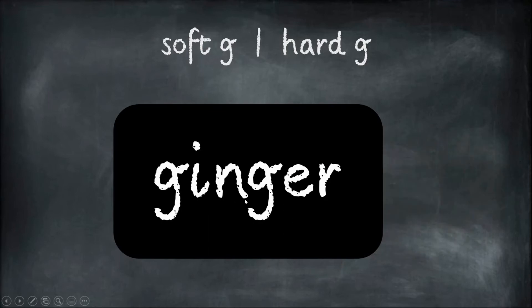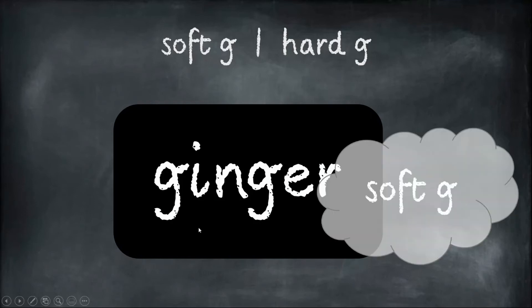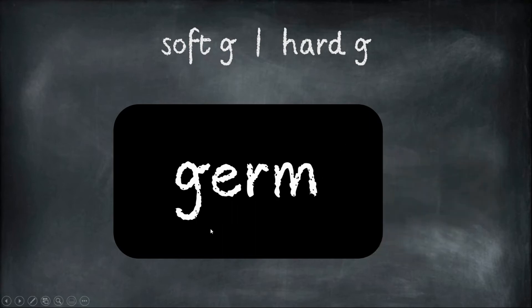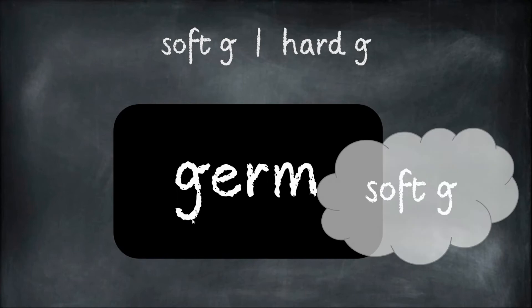Ginger: j-i-n-j-e-r. Two G's here, both saying J, which is the soft G. Gas: g-a-s. The G is saying G, which is the hard sound. Germ: g-e-r-m. The G is saying J, which is the soft G.